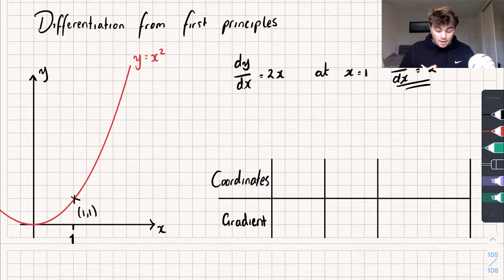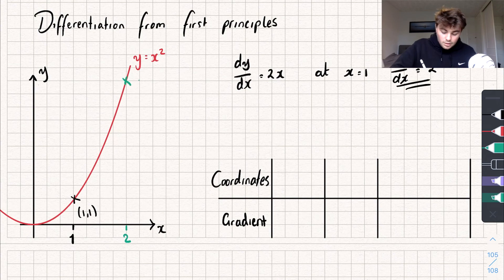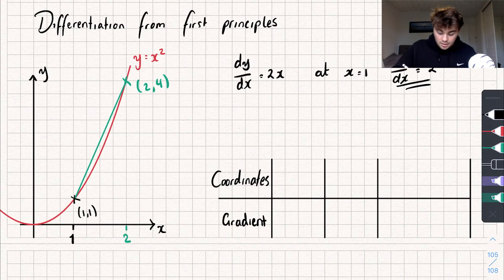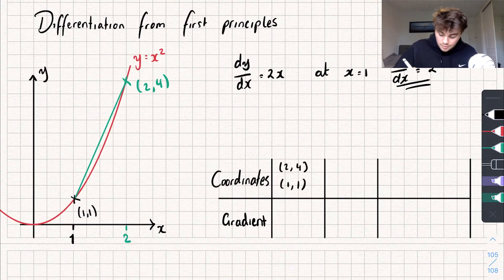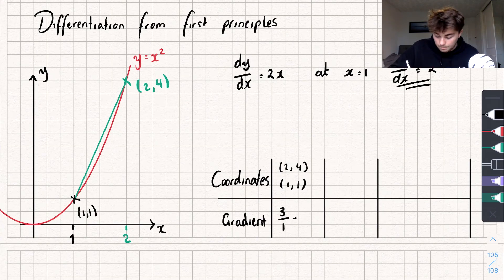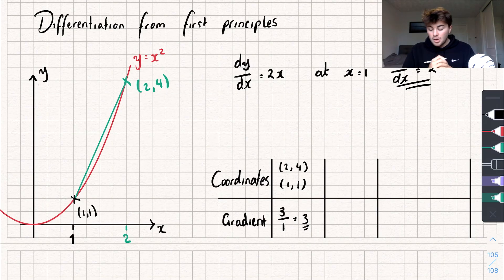So let's plot a second point on my curve, say at the point x equals 2. So this will be the point 2, 4. And let me connect the two points with a straight line — a chord that connects the two. Now let's find the gradient of this line. We've got the coordinates 2, 4 and the coordinates 1, 1. So to find the gradient we do the difference in y, which is 4 subtract 1, so 3, divided by the difference in x, which is 2 subtract 1, which is 1. And so we get a gradient of this chord as 3.